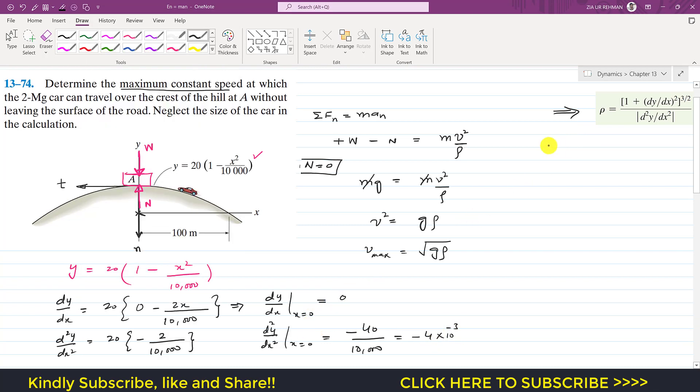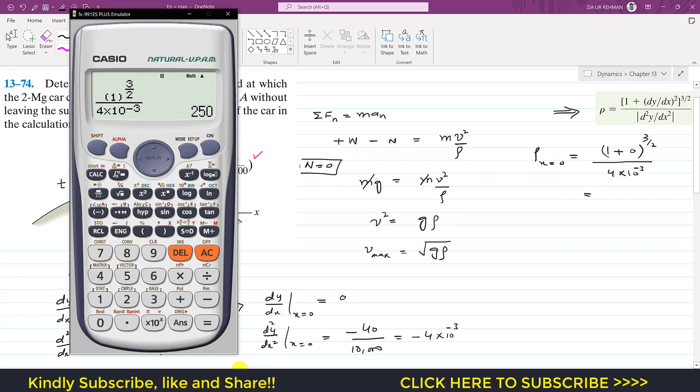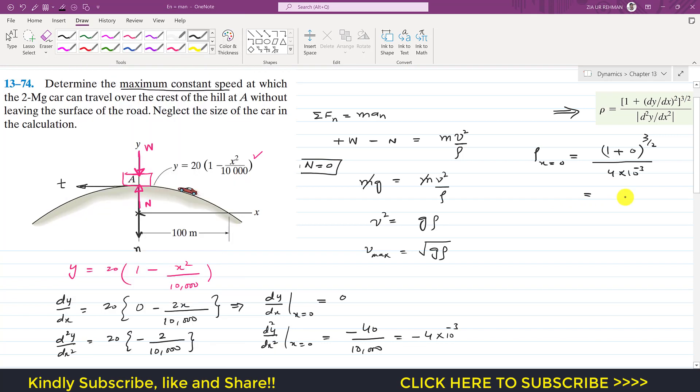So now once we know these two derivatives, we can find the radius of curvature at x is equal to 0, that is at point A, that will be equal to 1 plus dy by dx is 0, so this is to the power 3 divided by 2, 0 squared. So 0 squared is 0 divided by that absolute value of second derivative, so absolute value is 4 times 10 to the power minus 3. So if we evaluate this, this will give us 250. 1 plus 0 is 1, 1 to the power 3 divided by 2, so we get 250 meters.